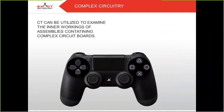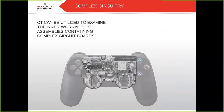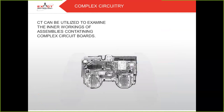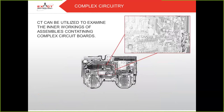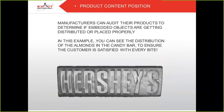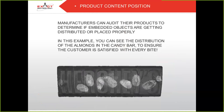Complex circuitry: CT can be utilized to examine the inner workings of assemblies containing complex circuit boards. And product content position: manufacturers can audit their products to determine if embedded objects are getting distributed or placed properly — for example, checking the distribution of almonds in a candy bar to ensure that the customer is satisfied with every bite.